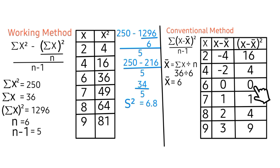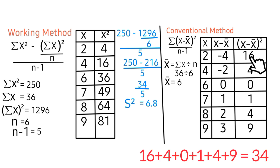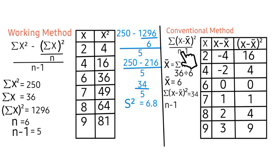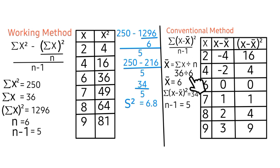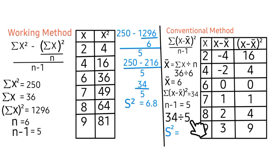Lastly, 3² = 9. Looking at our formula, we have summation (x minus x̄)², so we sum all these values: 16 plus 4 plus 0 plus 1 plus 4 plus 9 gives 34. Our n minus 1 value is 5. Substituting into our formula: 34 divided by 5 equals 6.8. We can see that the working method and the conventional method gave the same value of variance, which is 6.8.